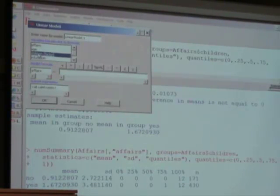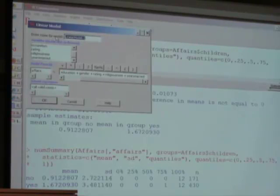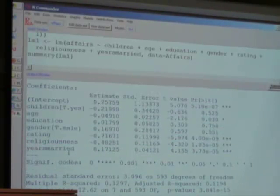It doesn't have to be one zero. It could be any variable, I can take the number of children one through five and have the model recognize it as a factor. We have children, age, education, gender, rating and religiousness, and years married. We just put all these in the model and let's call it linear model one. We run it and we get the answer here.